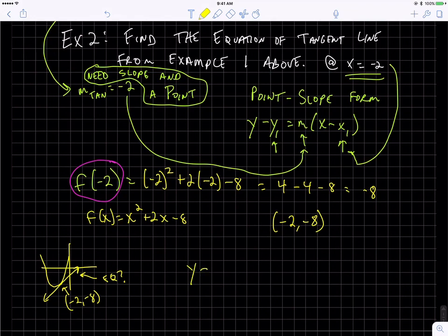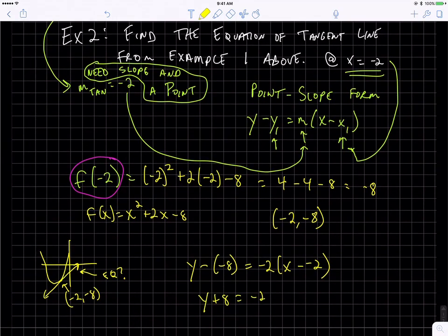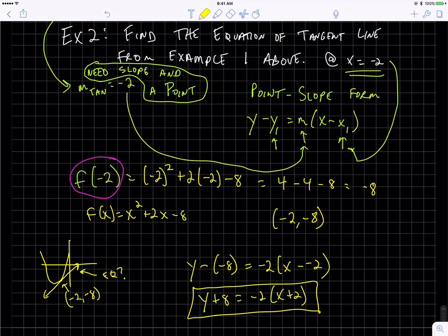So it's going to be y minus the y value equals the slope, which we know from before was negative 2, times x minus the x value. So I simplify it and write y plus 8 equals negative 2 times x plus 2. I don't ask for a certain form, so you can just give me that form. And that is how you find the equation of the tangent line.